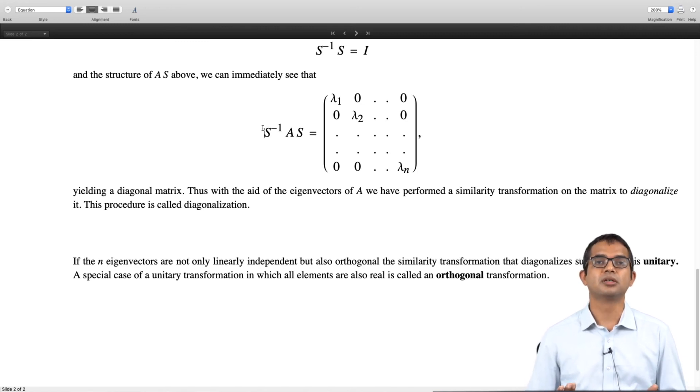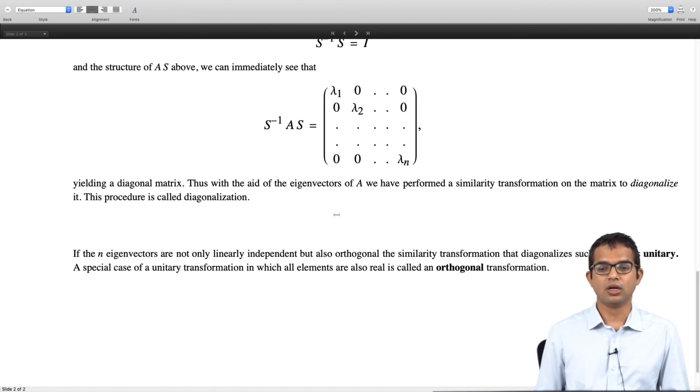So u dagger is the same as just u transpose if all the elements of your matrix are real then you get an orthogonal transformation which is another further special class of unitary transformation or unitary matrices. Okay so that is all for this lecture thank you.